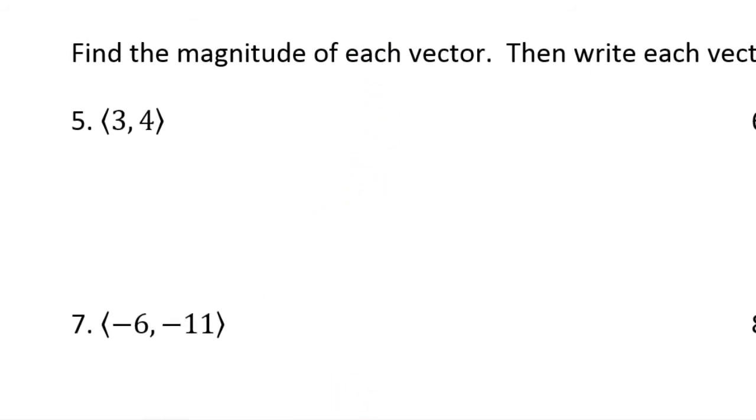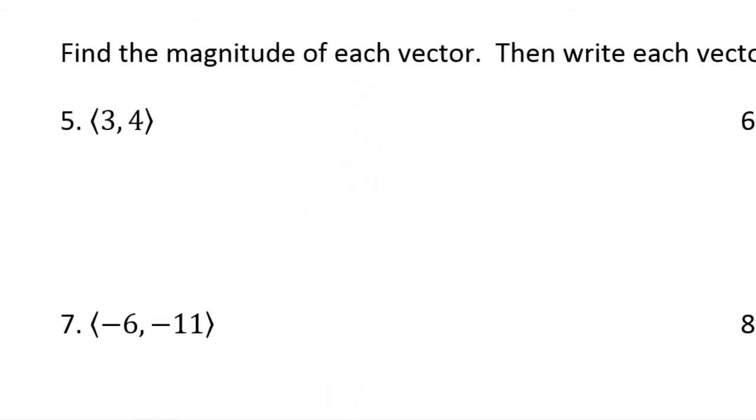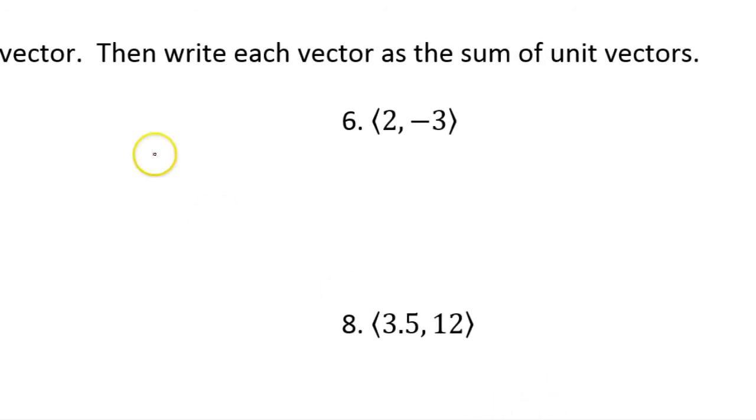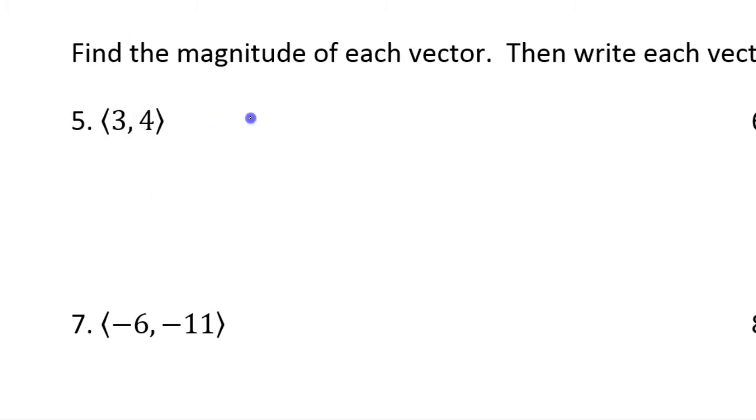Now, the directions are changing a little bit. Find the magnitude of each vector. Then, write each vector as the sum of unit vectors. We're given component form. So, first, we will find the magnitude.